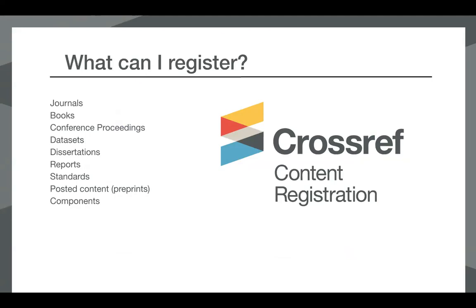You can register all types of content with Crossref — it's not just for journals and journal articles. We're seeing a lot of growth in books and book chapters being registered, as well as conference proceedings, datasets, and a large growth in preprints. We've also introduced the ability for members to register peer reviews with Crossref and get a DOI for a peer review, so it can be linked to and cited within another research object.